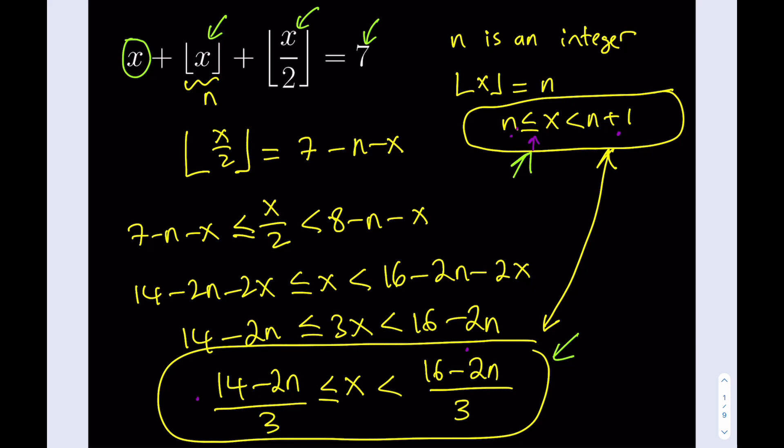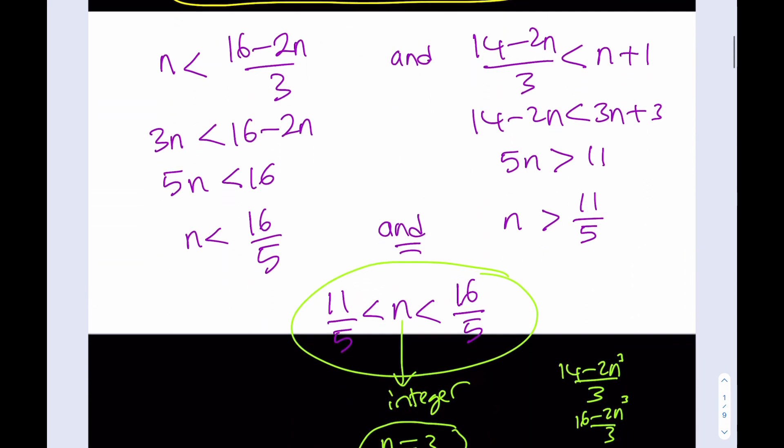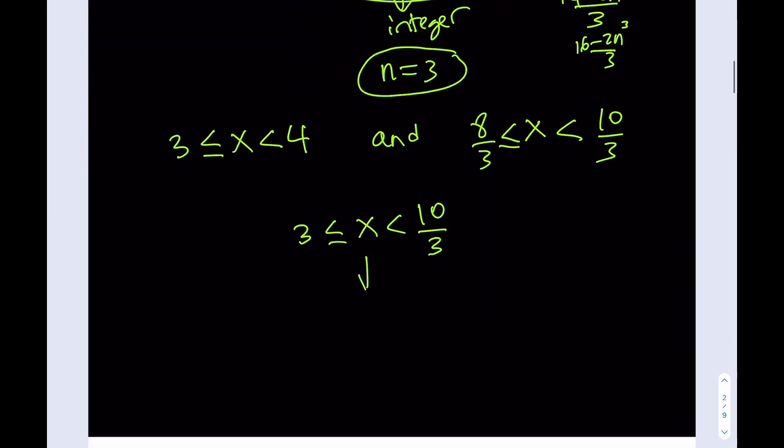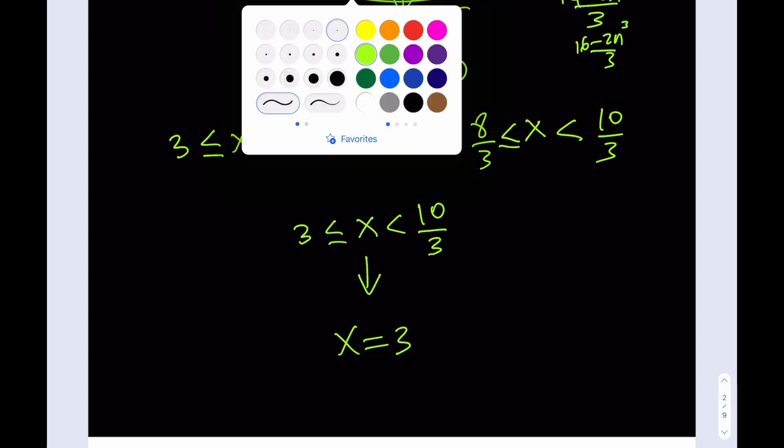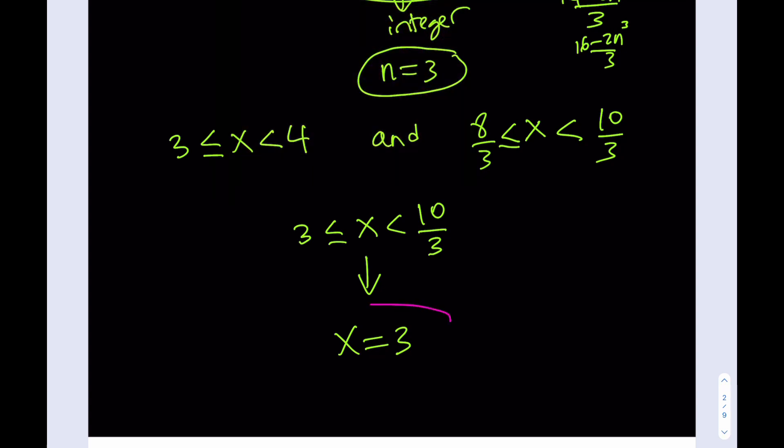What's our conclusion then? Knowing that x is an integer here, we conclude that x needs to equal 3. So our solution is x equals 3. And that's the end of our story.